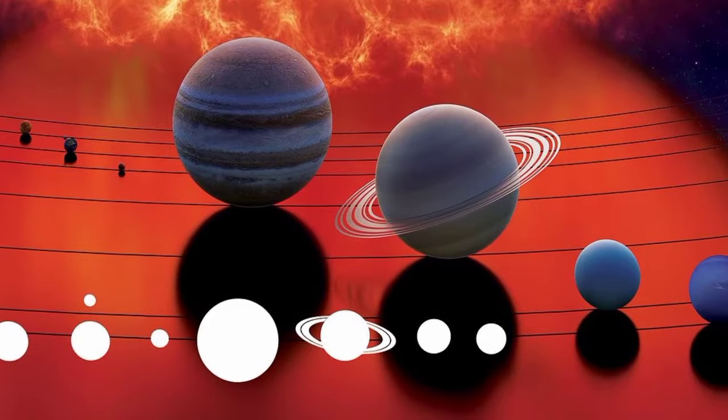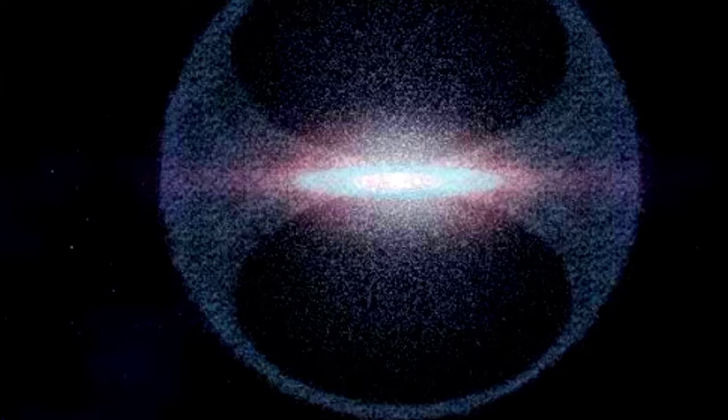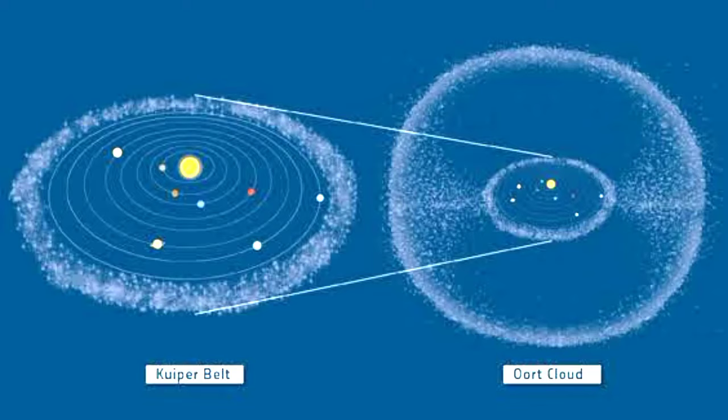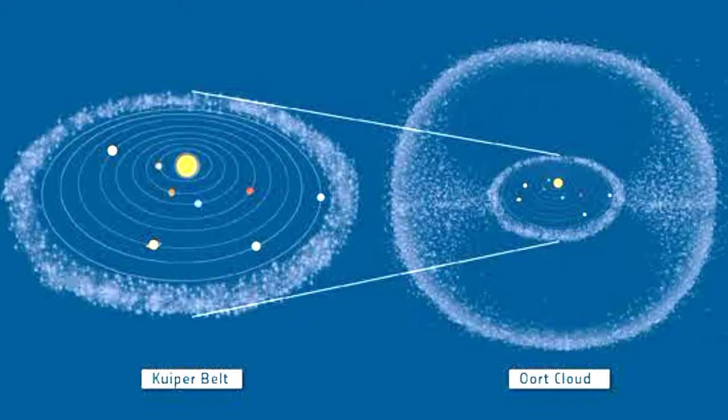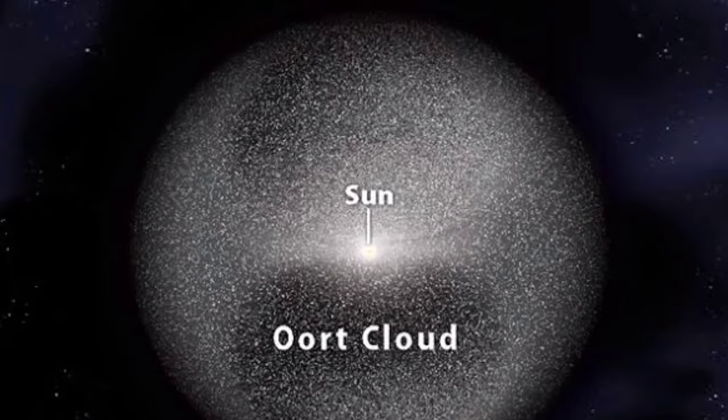Unlike the planets, which orbit on the same plane of the solar system, the Oort cloud is a dense smattering of material that envelopes the entire solar system. Like the Kuiper belt, the Oort cloud is a reservoir of trans-Neptunian objects, though it is over thousands of times more distant.